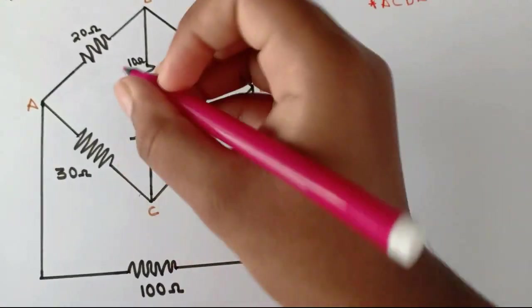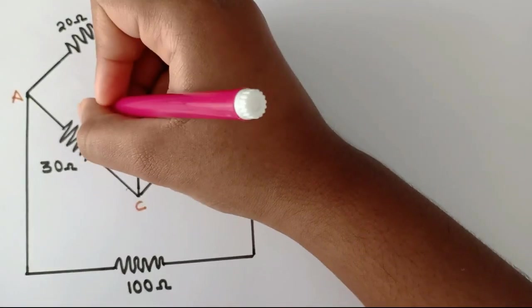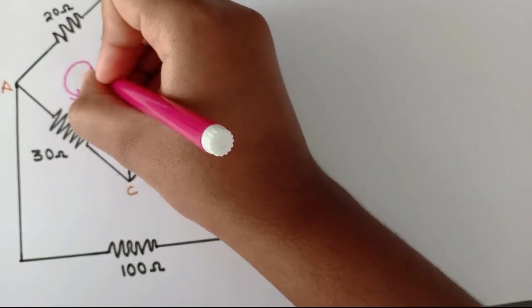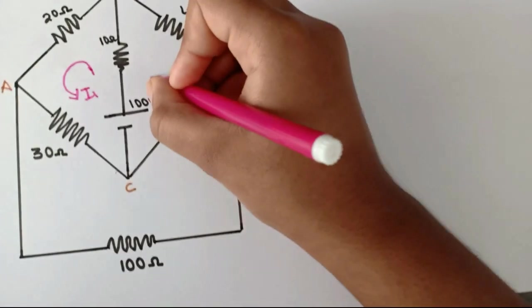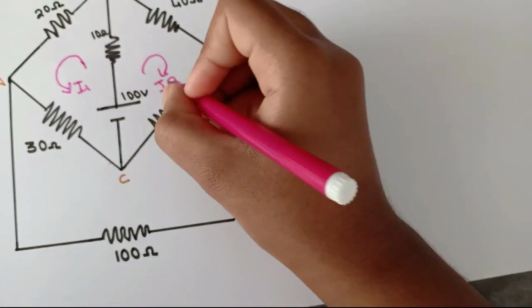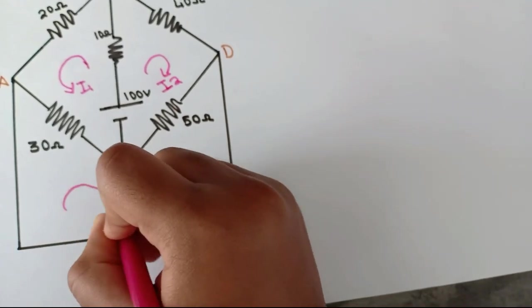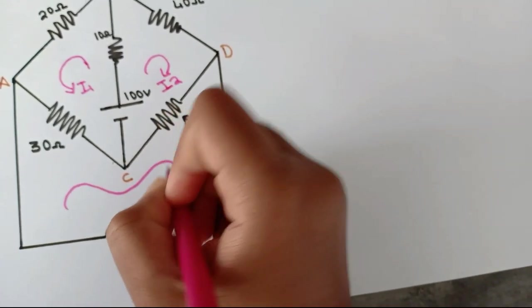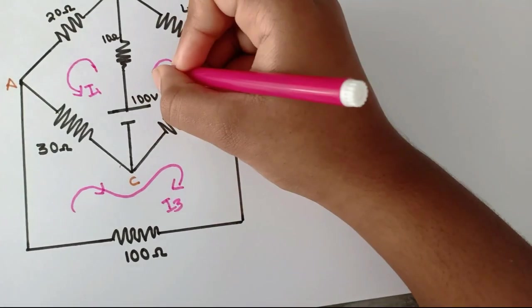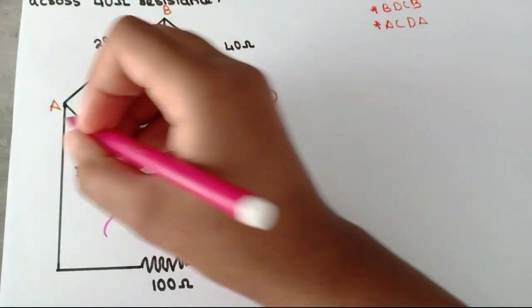Let's begin marking the mesh currents. I'll randomly mark the first mesh current as I1, the second as I2, and the third as I3.